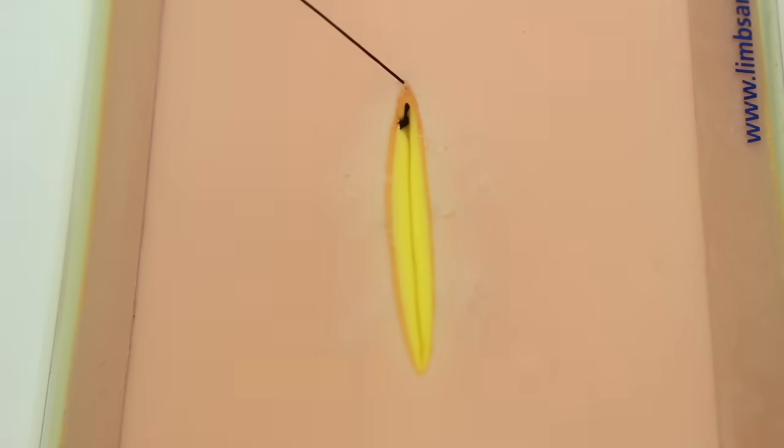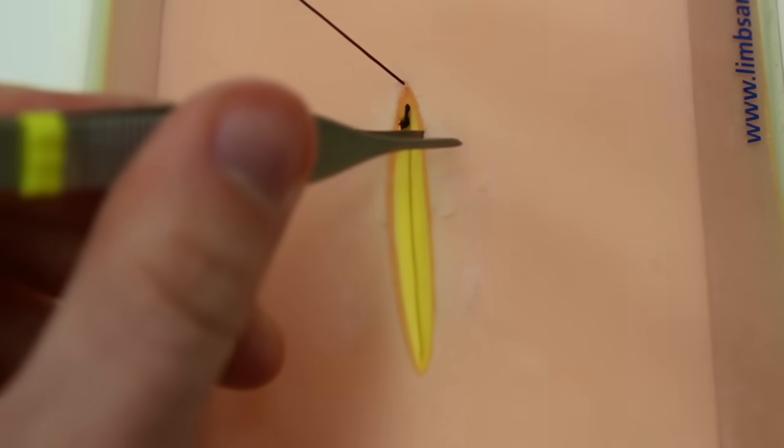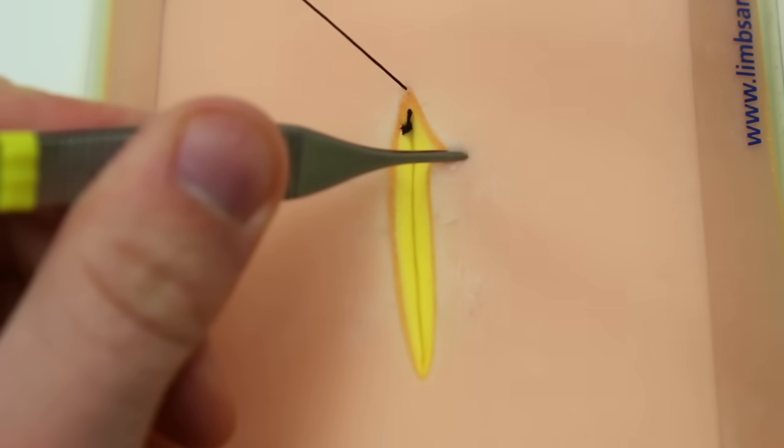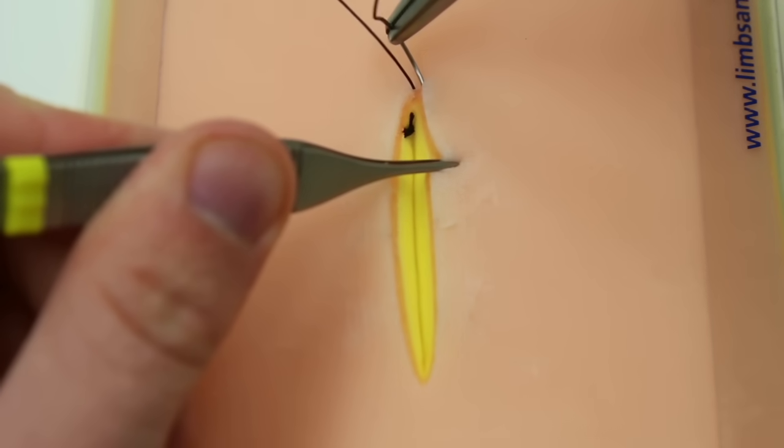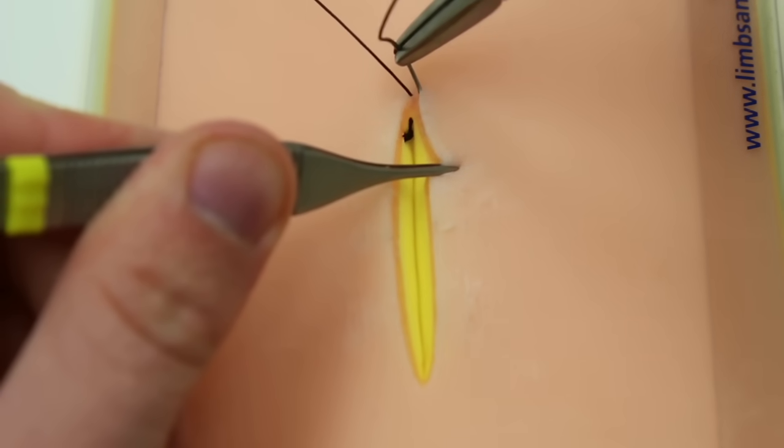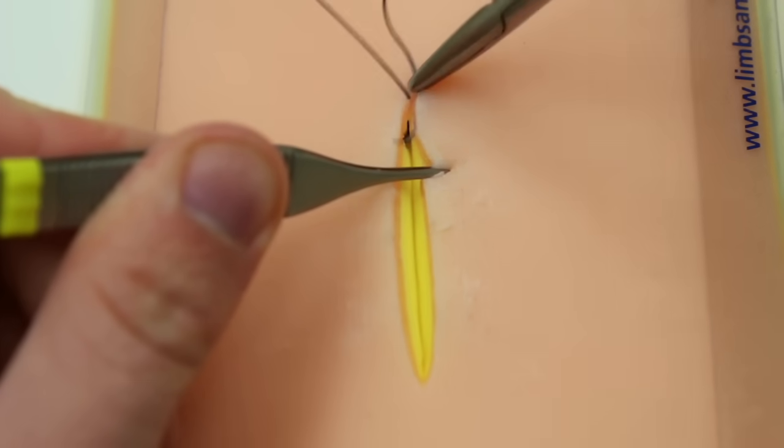Now load the needle towards yourself. Your first pass here, you're going to start right where your incision comes out, right at the dermal-epidermal junction. Moving the skin, coming out right at the dermal-epidermal junction.